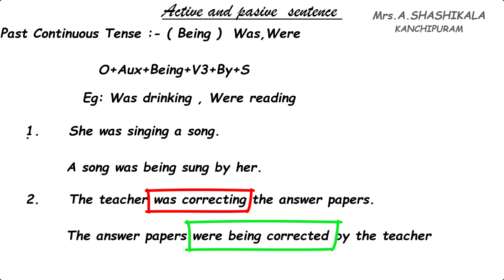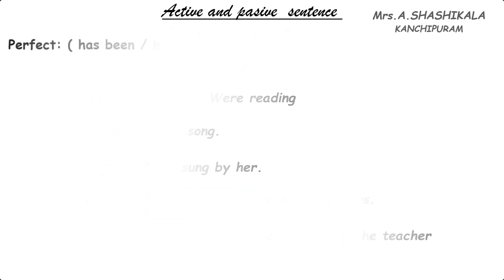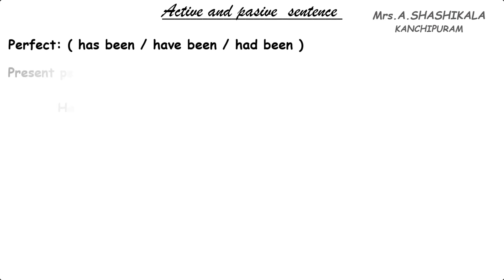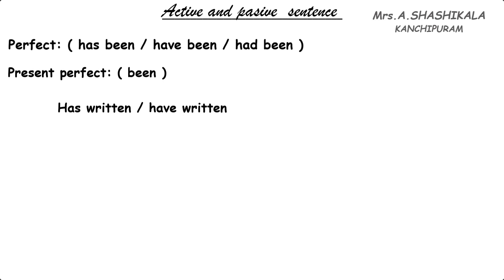Now we are going to see the perfect tense. Perfect means we are going to use 'has', 'have', or 'had' in the active voice, which follows the V3 form of the verb — that is, the past participle. When it changes to passive, we have to use 'has been', 'have been', or 'had been'. In the present perfect passive, we are going to use 'been' as the V form of the verb.